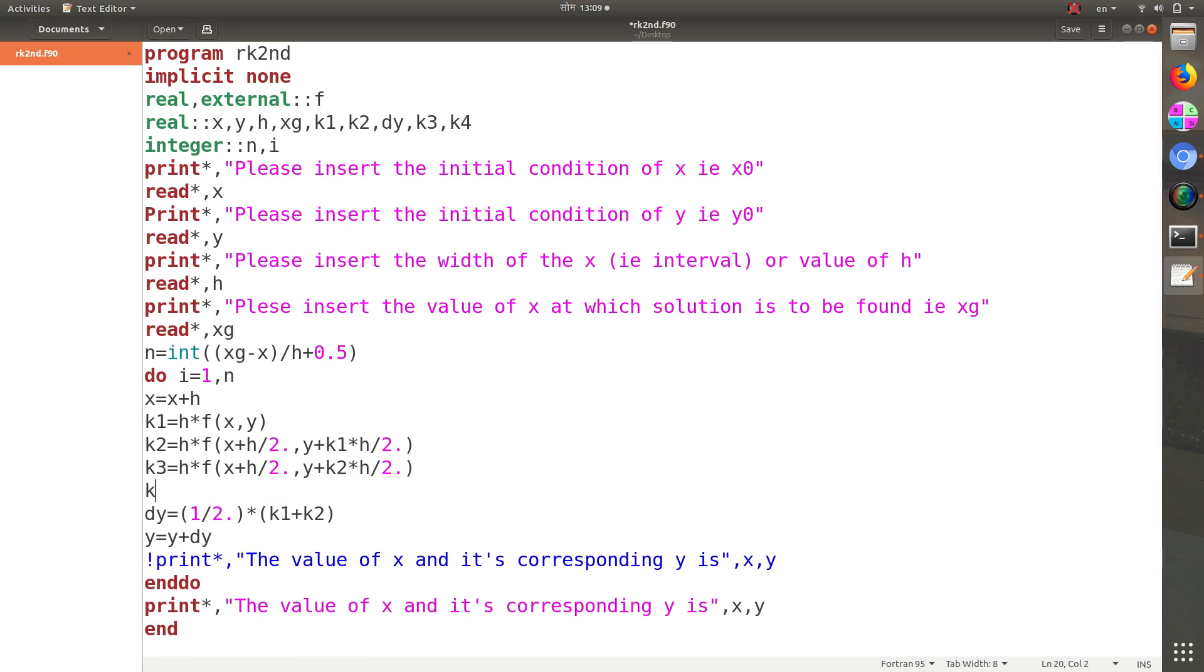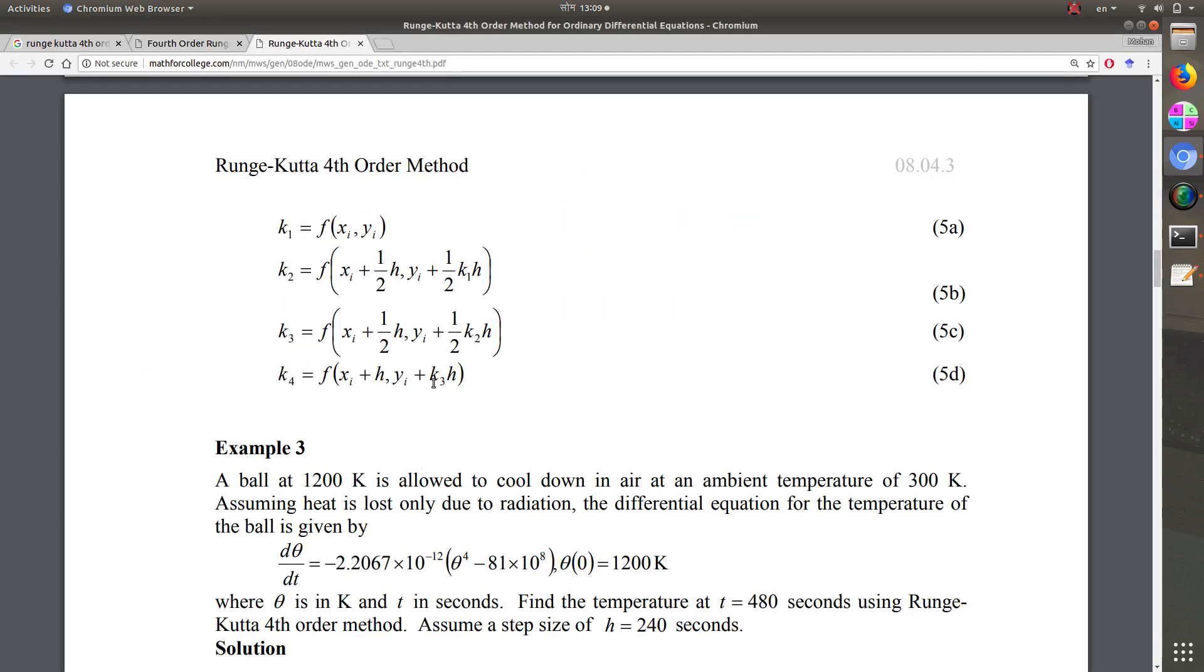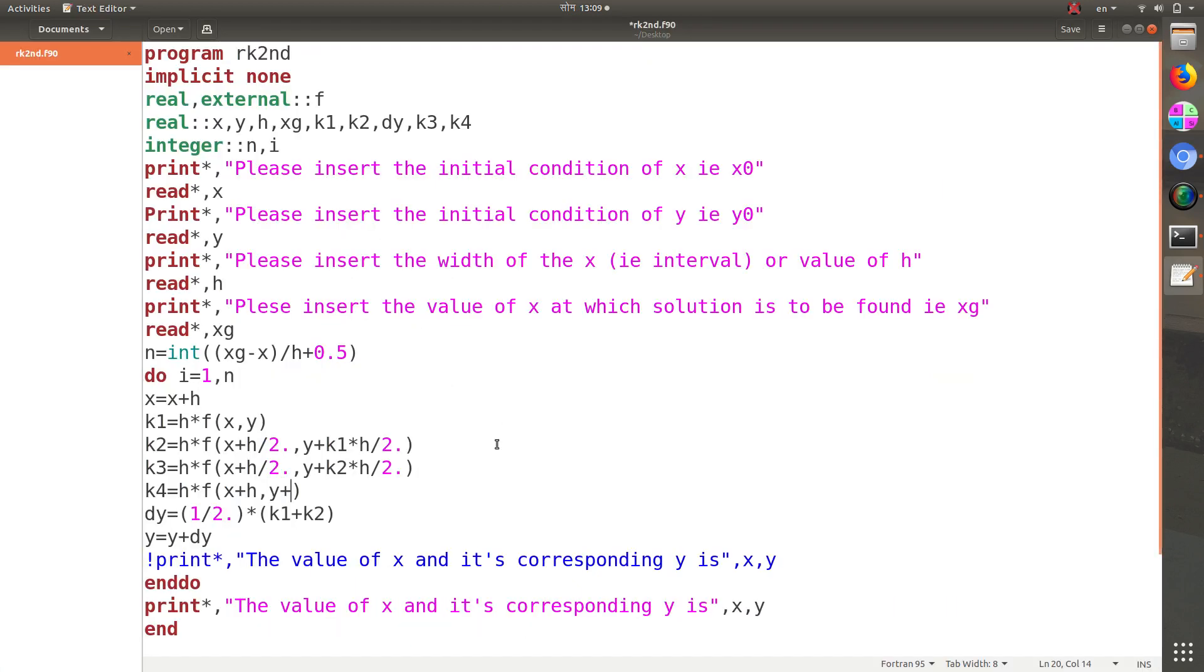k3 equals h times f(x + h/2, y + k2/2). This is our k3. Now k4 equals h times f(x + h, y + k3*h).